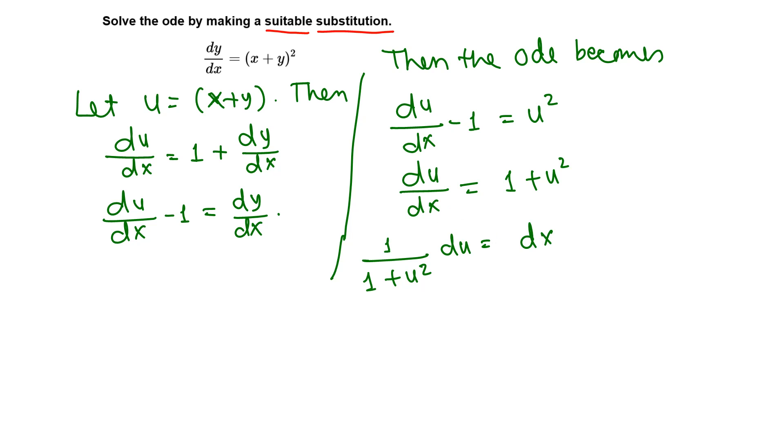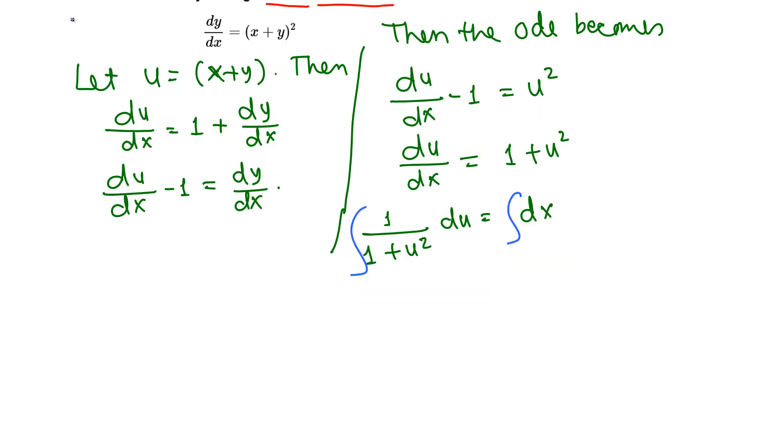Now integrate both sides. That is like tangent inverse, 1 over (1 + u²) du. So this is tangent inverse of u equals x + c. We can take tangent of both sides, so u equals tan(x + c).